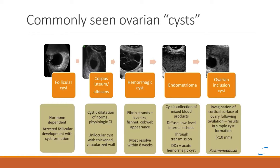Finally, the ovarian inclusion cyst occurs because of invagination of the cortical surface of the ovary following ovulation, resulting in a simple cyst being formed. These usually measure less than 10 millimeters in size and are often still seen in the post-menopausal population.